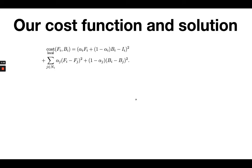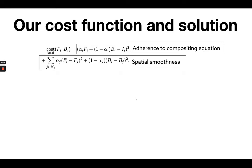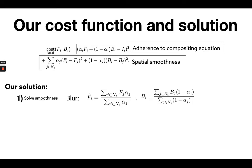Our cost function and solution is as follows. We have the adherence to the compositing equation, and we have spatial smoothness. In our solution, we solve for the smoothness first by doing a blur. Then we solve for the compositing second by doing a fusion.